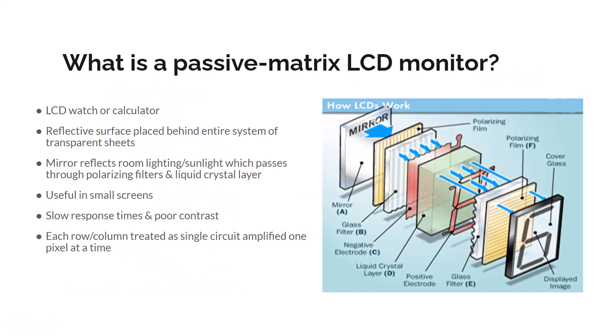There are two types of LCD monitors: passive matrix and active matrix. In radiology, we use the active matrix. Passive matrix examples include watches and calculators, which are more useful for small screens. They have a reflective filter that reflects light over the entire area of the screen. Because passive matrix designs have slow response times and poor contrast, we do not use them in radiology.